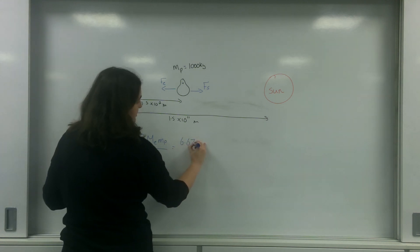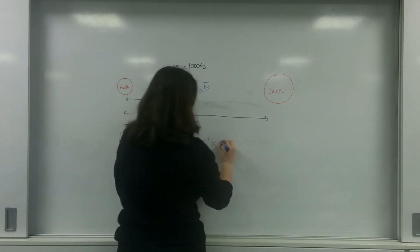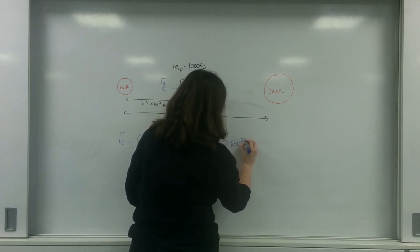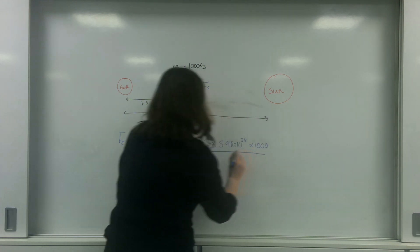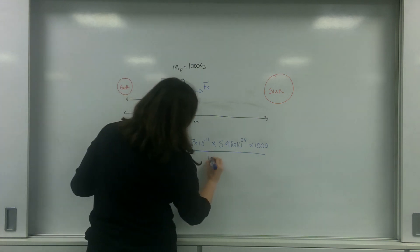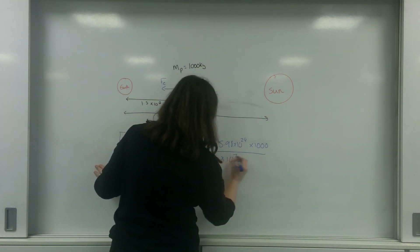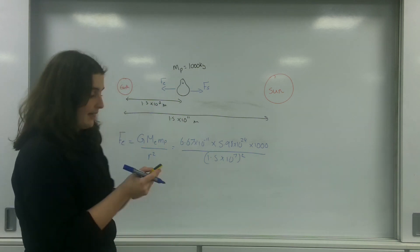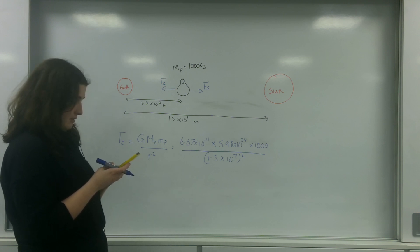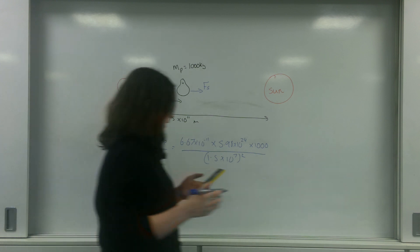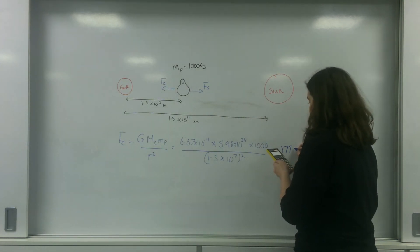So that's 6.67 times 10 to the minus 11 times the mass of the Earth, which is on your data sheet, of 5.98 times 10 to the 24 times the mass of the penguin, which is 1,000, all over the radius squared or the distance here. That's 1.5 times 10 to the 7 squared. And that equals, if I just put that into my calculator here, 1772 newtons.